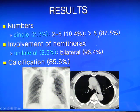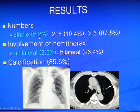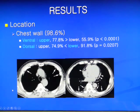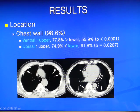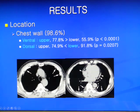Pleural plaques were usually multiple or bilateral, but single in 2.2% and unilateral involvement in 3.6%. The chest wall was the most common site of pleural plaques. In the ventral side of the chest wall, pleural plaques were significantly more common in the upper chest wall, while in the dorsal side, they were more common in the lower chest wall.